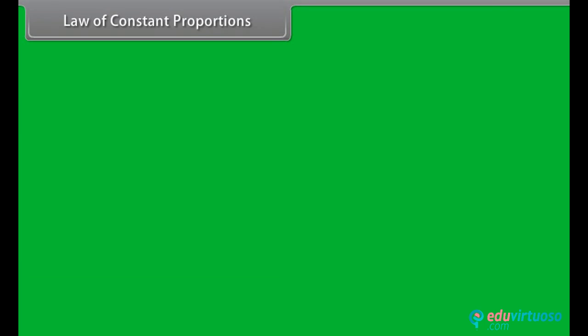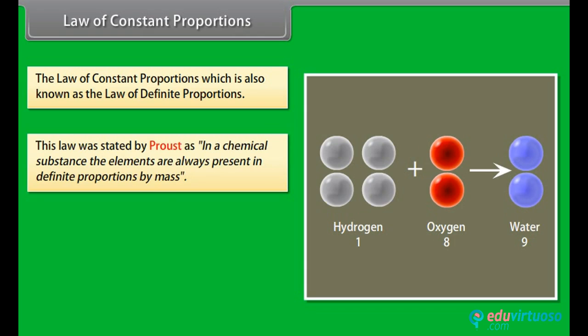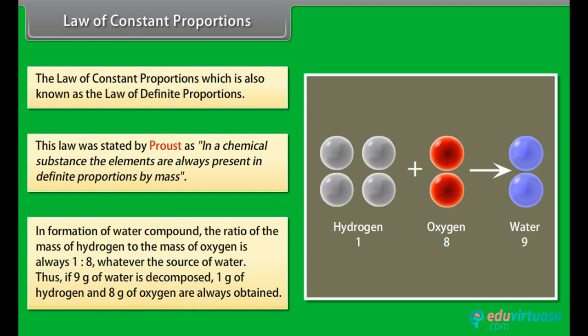Law of Constant Proportions, which is also known as the Law of Definite Proportions, was stated by Proust. In a chemical substance, the elements are always present in definite proportions by mass. In formation of water compound, the ratio of the mass of hydrogen to the mass of oxygen is always 1 is to 8, whatever the source of water. Thus, if 9 grams of water is decomposed, 1 gram of hydrogen and 8 grams of oxygen are always obtained.